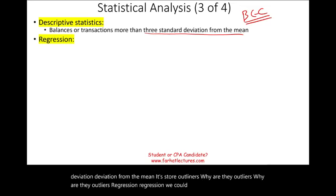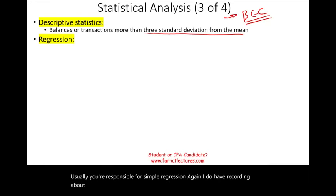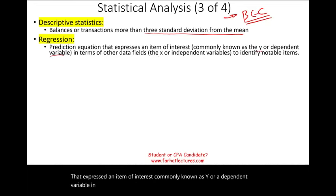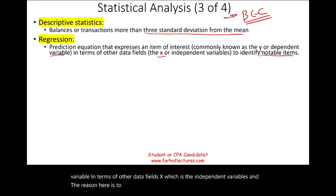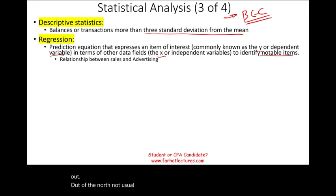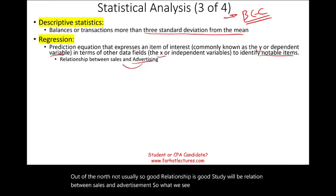The second is regression. We could have many types of regression; usually you're responsible for simple regression. Regression is a prediction equation that expresses an item of interest — commonly known as y or the dependent variable — in terms of other data fields x, the independent variables. The reason is to identify notable items: something that's out of the norm, not usual.